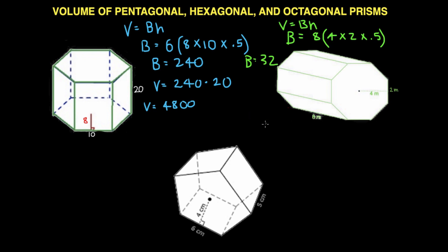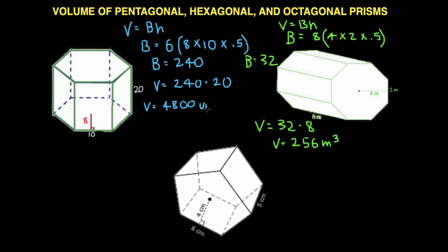I'll just write it down here. Volume equals 32 times our height which is 8. 8 times 32 is 256. And then we put our units meters cubed. I forgot to do it here earlier, so units cubed.